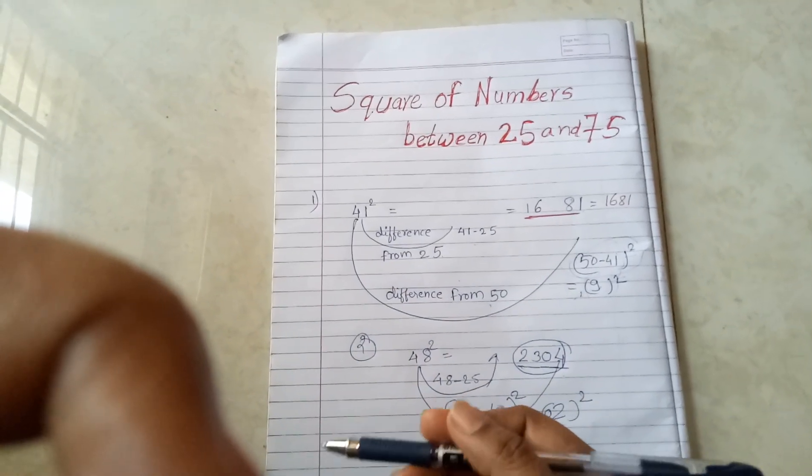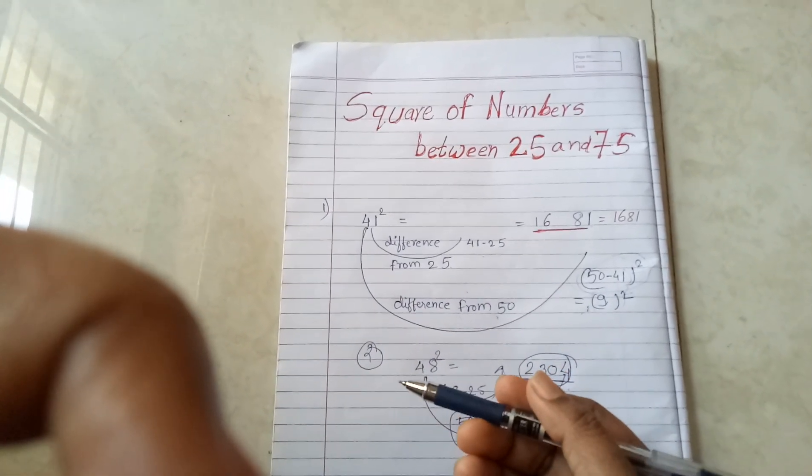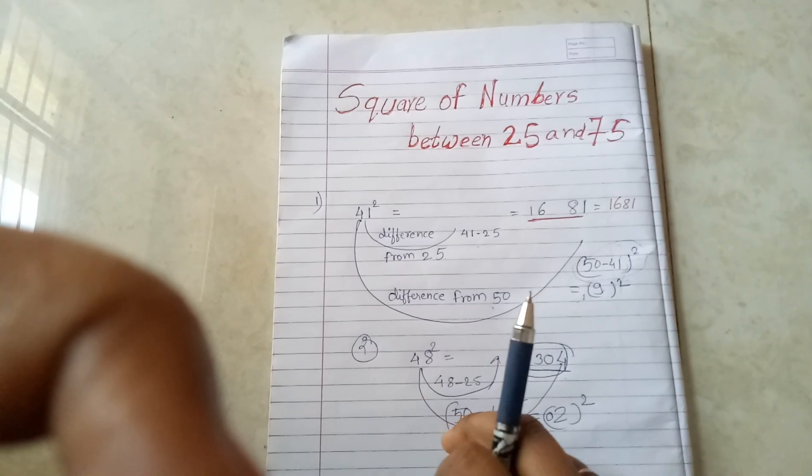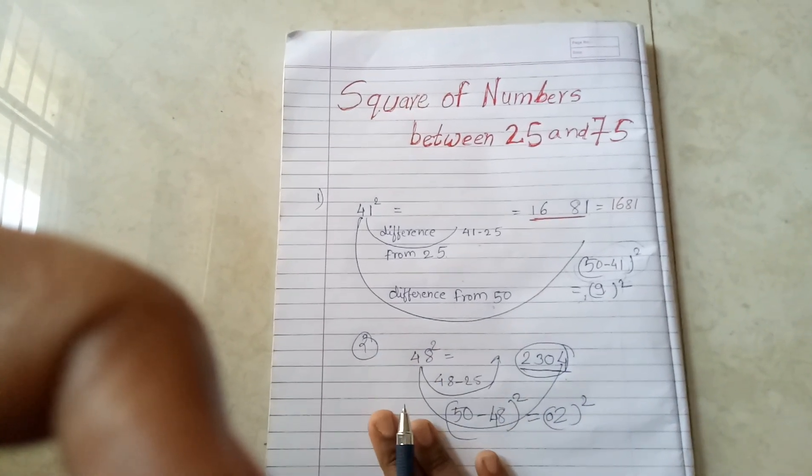In this way we can find square of numbers easily within two steps, or orally also you can do this method.